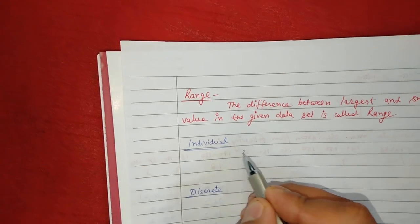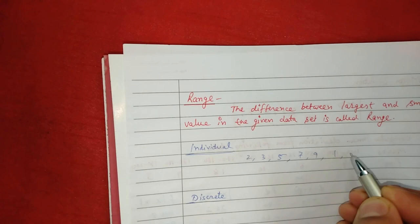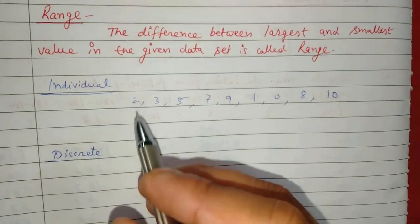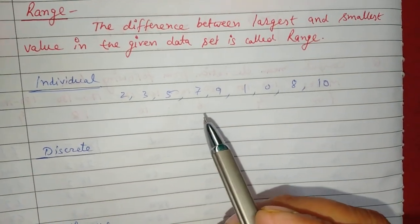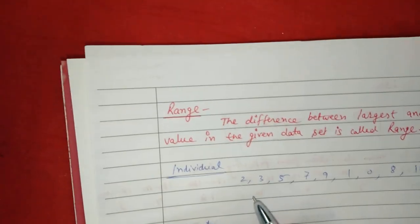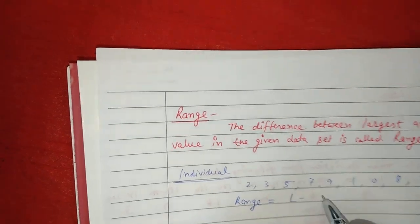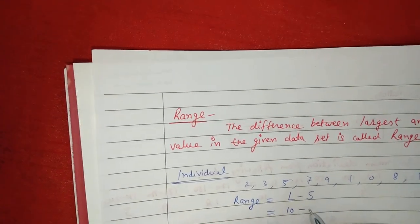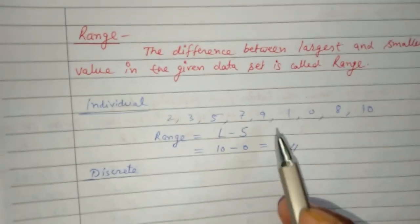For example, we have a data set: 2, 2, 3, 1, 0, 8, 10, 5, 7, 9 — so we have nine data points. Now we are talking about range. We have a simple formula: range equals the largest value minus the smallest value. The largest value is 10 and the smallest value is 0, so the range is 10.